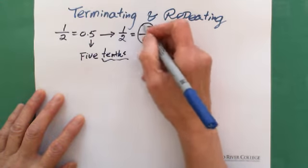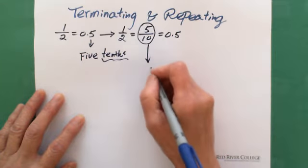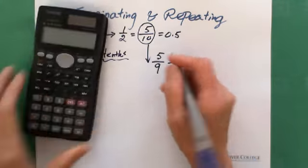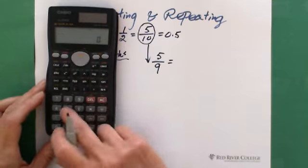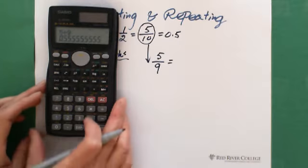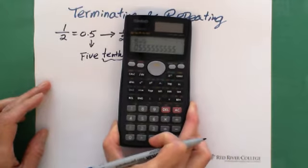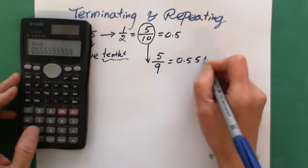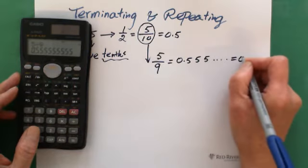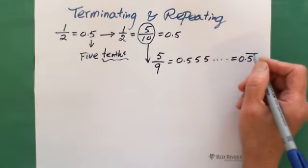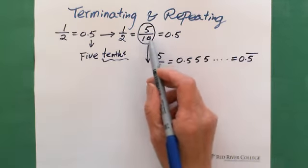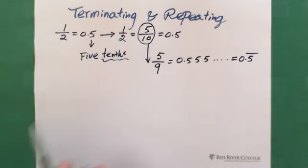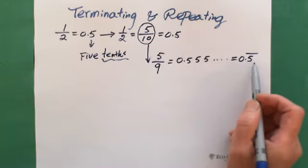Now look at this. If the denominator becomes 9 — if this is 5 over 9 — we can use a calculator to show: 5 divided by 9 equals 0.5555... forever, which we call 0.5 repeating. So 5 over 10 is 0.5 terminating, while 5 over 9 equals 0.5 repeating.